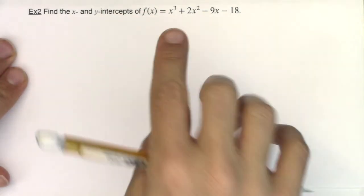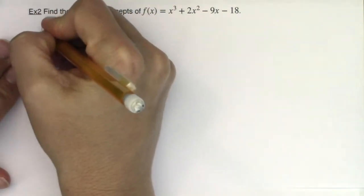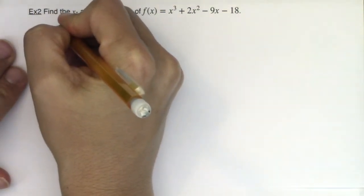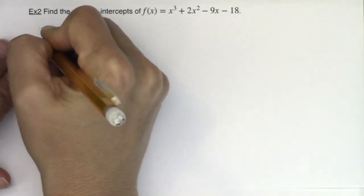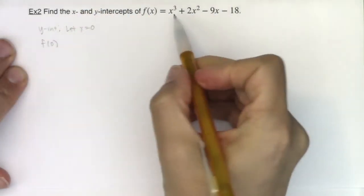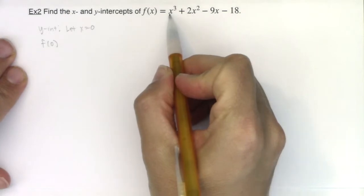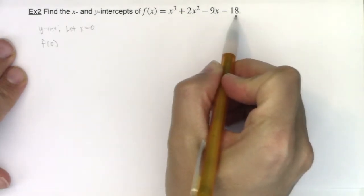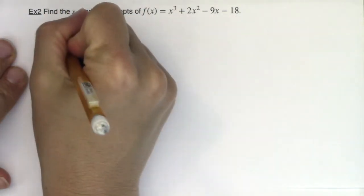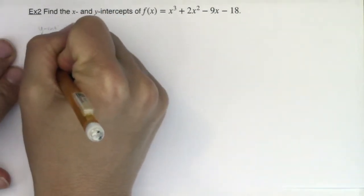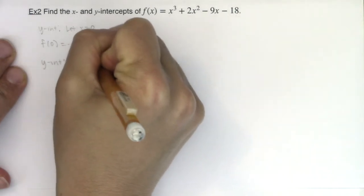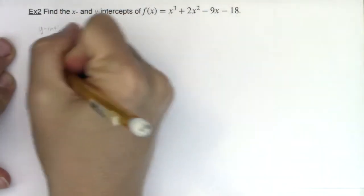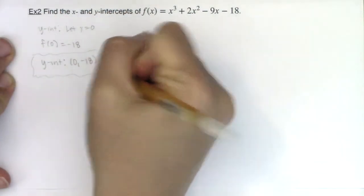I'm going to start with the y-intercept. The y-intercept is always the easier one because we'll only ever have one y-intercept and we find it by letting x equal 0. If I let x equal 0, this term's going to zero out, zero out, zero out, I'm going to be left with a negative 18, so my y-intercept is going to be the ordered pair (0, -18). So there's my y-intercept.